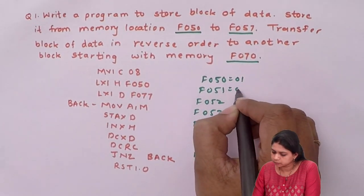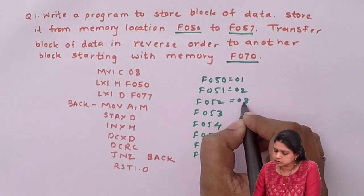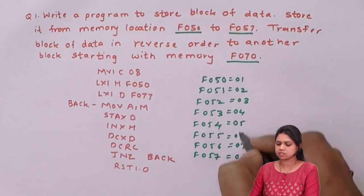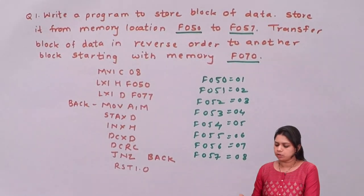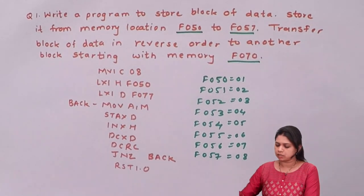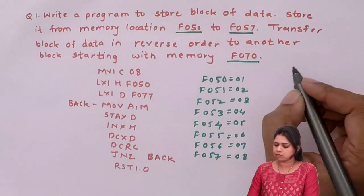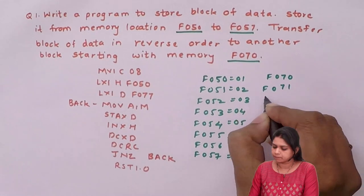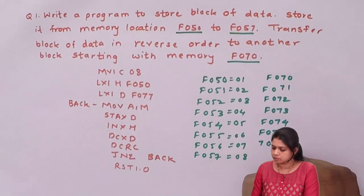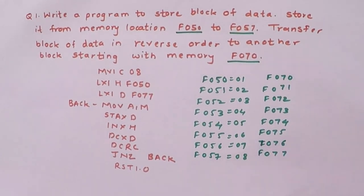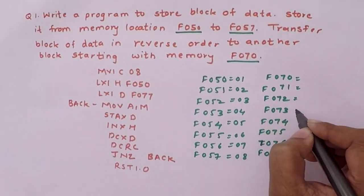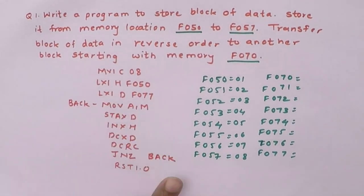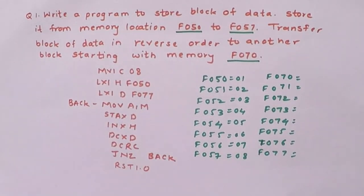Suppose my numbers are 1, 2, 3, 6, 7, and 8 — suppose I have these 8 numbers. I have to transfer these 8 numbers to another block starting from F070 but in the reverse order. So the data from F050 to F057 gets transferred to F077 down to F070, in reverse order.